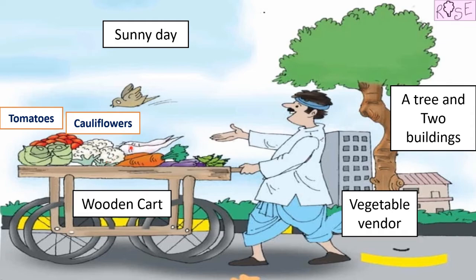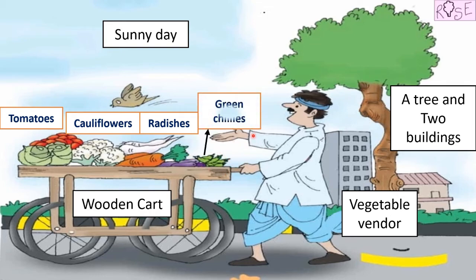What else can you see? What are these white colored vegetables? These are radishes. Yes, radishes. And what are these green ones? What are they called? They are called green chillies. Now let us talk about this vegetable — what are these called? These are called cabbages.